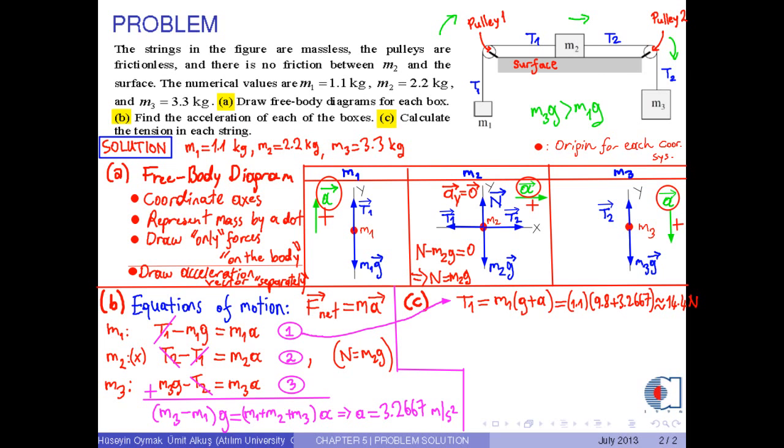Finally, from equation 3, we have T2 equals M3 times G minus A. As a result, we obtain approximately 21.6 Newtons. This is the tension on the string connecting M2 and M3.